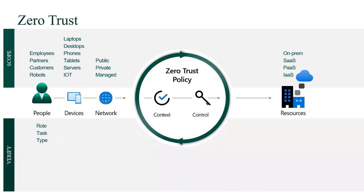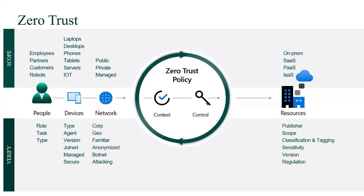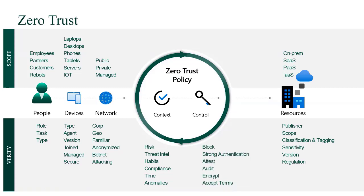We verify context — the role, task, type, the device, whether it's managed or unmanaged, joined, patched or unpatched, the network — is it corporate, geographic, familiar, anonymized, an attacking network, or a botnet — and the resource, which may have publication information, classification and tagging of data, or sensitivity applied. We use context from risk, threat intelligence, time, and anomalies, then apply a control: block, authenticate, step up, audit, encrypt, or accept terms. This is the reality of what zero trust does.